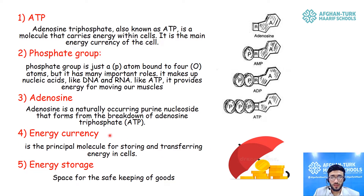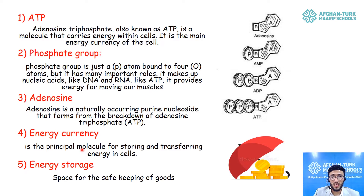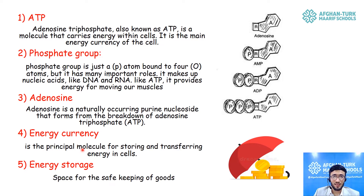You should be familiar with the term energy currency. Energy currency is the energy type that enables cells to function. The different types of feeding materials that we eat need to be converted into ATP. This is the responsibility of cellular respiration: to convert different macromolecules into a usable form of energy, the energy currency called ATP or adenosine triphosphate, which is produced during cellular respiration.